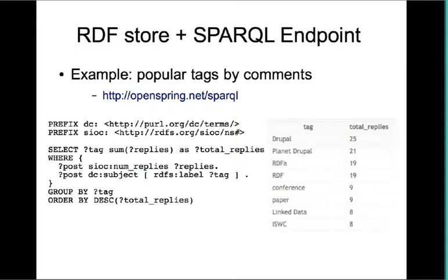Here is an example SPARQL query you can run. This is a query to get a list of tags ordered by popularity — specifically, it shows the most popular tags that have received the most comments from the articles I wrote on my blog. If you go to openspring.net/sparql and try this SPARQL query, selecting HTML on the right-hand side, you will get the results shown here.